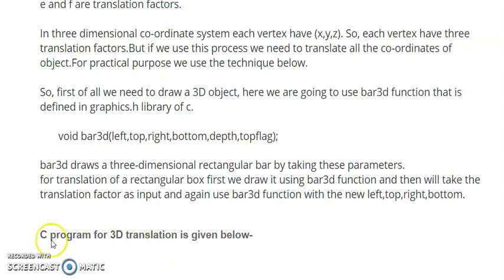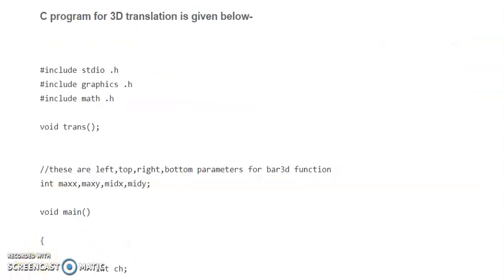The C program for 3D translation is given below. First we have to include stdio.h, then include graphics.h, then include math.h. Next we are taking void trans function. Inside this, these are the left, top, right, bottom parameters for bar 3D function.